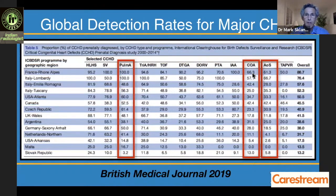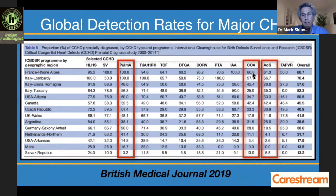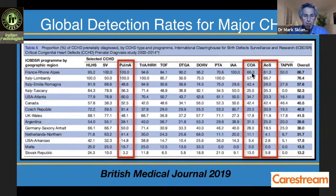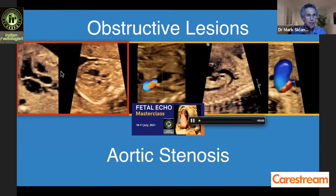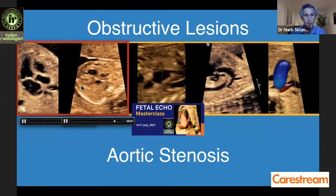Coarctation is one of the most challenging major forms of heart disease to detect in the fetus, along with total anomalous pulmonary venous return. Detection rates range from zero to about 42%, and even the outliers don't exceed 66%. The vast majority of coarctation cases are still being missed with prenatal screening. We'll start by discussing aortic stenosis.